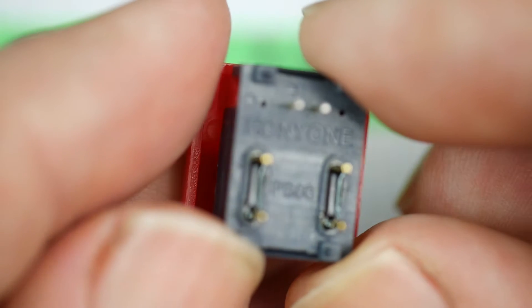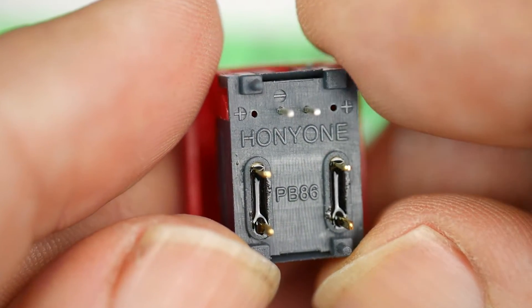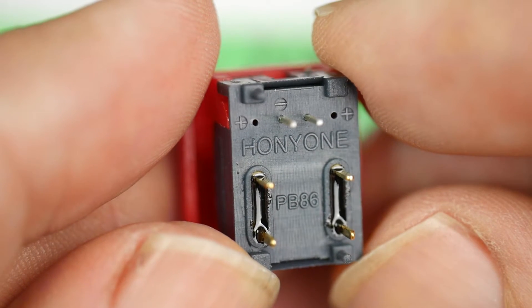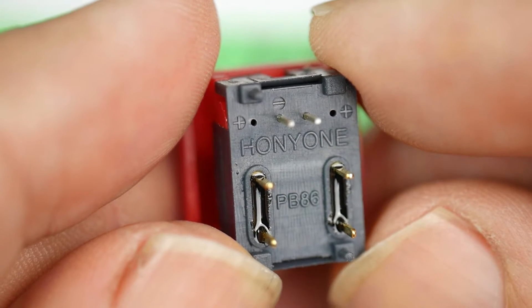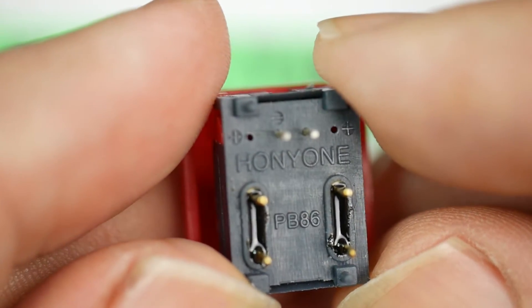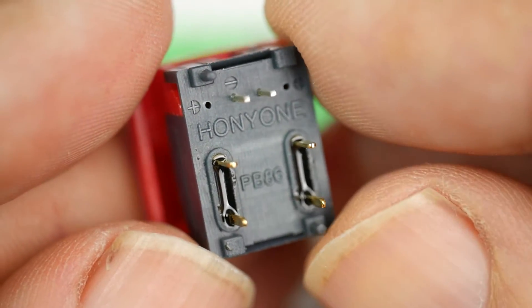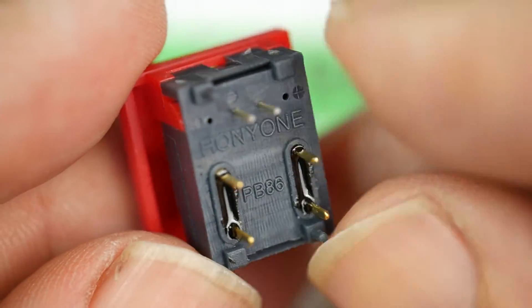And I thought, oh, that can't be as good as the original. But there it is. Hony1. PB86, I think that says on there. PB86 is the thing to search for on AliExpress.